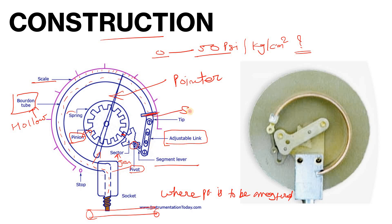There is also a seal, which is used because gas or liquid flows inside the hollow tube. If there is no seal, the gauge will not show an accurate reading. So if your pressure gauge is not showing an accurate reading and you go for preventive maintenance, it is very important to check the seal. The seal is connected to the tip of the tube.